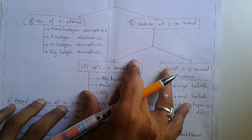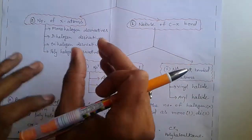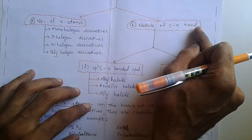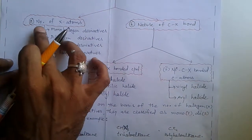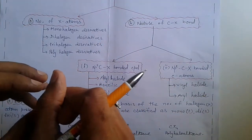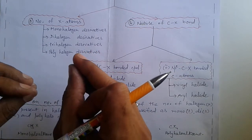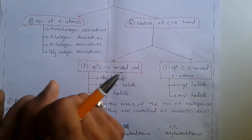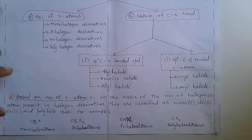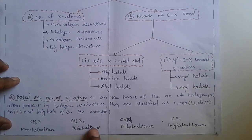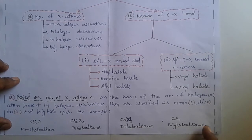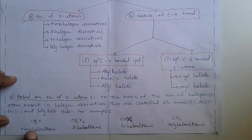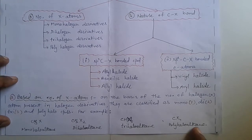Now let's move towards classification of halogen derivatives. Halogen derivatives are classified on two bases: number of halogen atoms and nature of the carbon-halogen bond. On the basis of number of halogen atoms, they are classified as mono (one), di (two), tri (three), and poly or tetra (four halogen atoms), giving mono halo alkane, dihalo alkane, trihalo alkane, and polyhalo alkane.